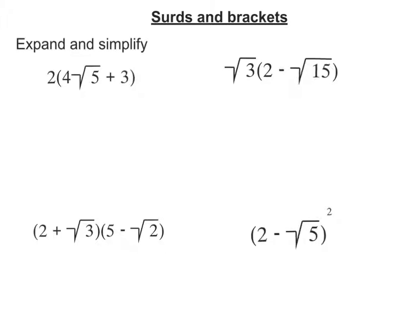In this video we're going to expand some brackets which have got surds with them. Expanding brackets is still the same as what we did before. You take the term outside and times it by the terms inside. So the first one is going to be 2 times 4 root 5 plus 2 times 3. 2 times 4 is 8, so this is 8 root 5 plus 6.